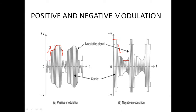On the opposite side, when brightness is maximum, amplitude is maximum. So the major difference between positive and negative modulation is the effect of noise interference. Whenever brightness increases and amplitude increases, that is positive modulation. Whenever brightness increases but amplitude decreases, that is negative modulation.